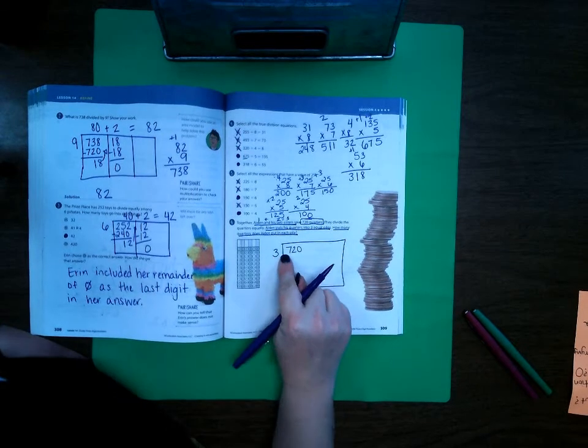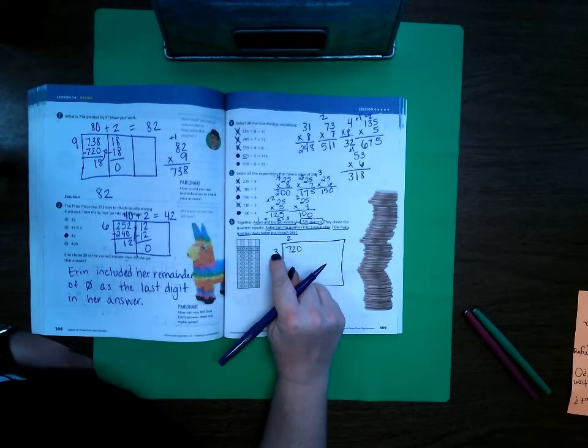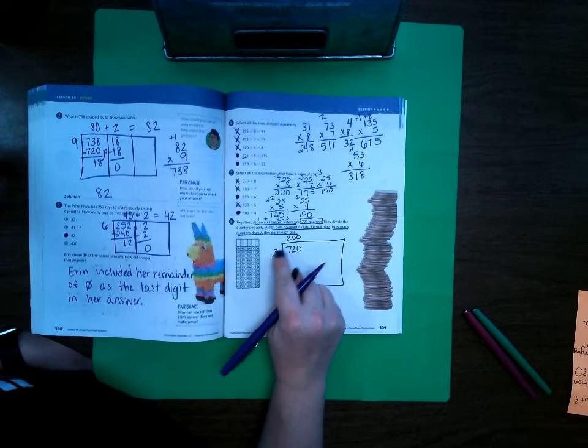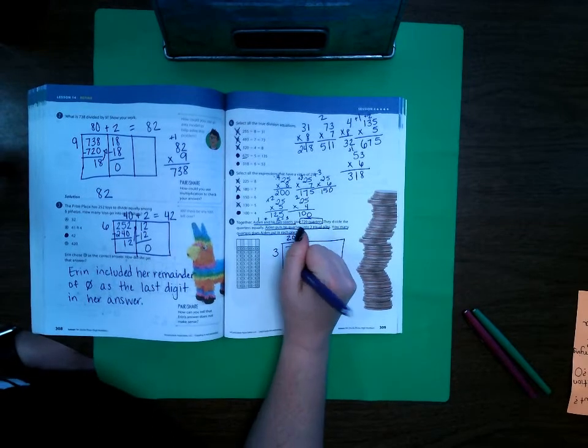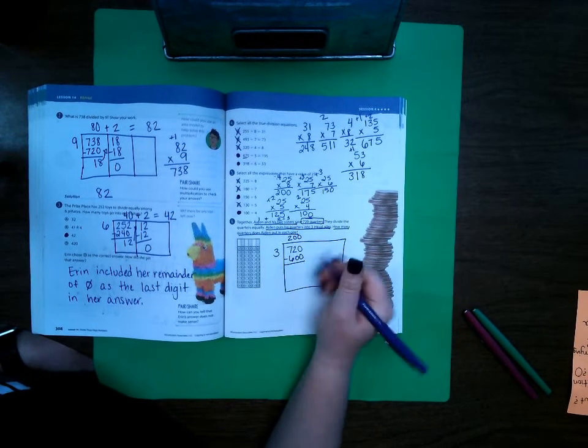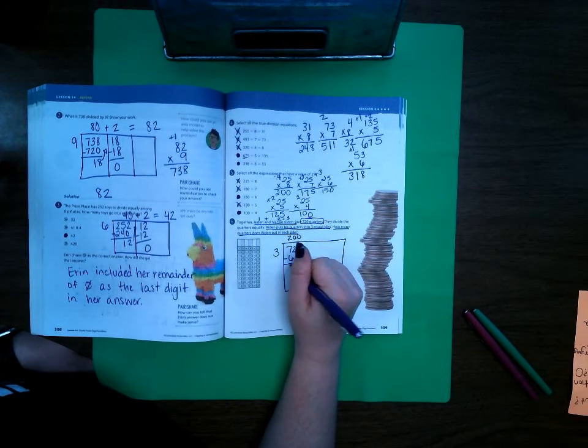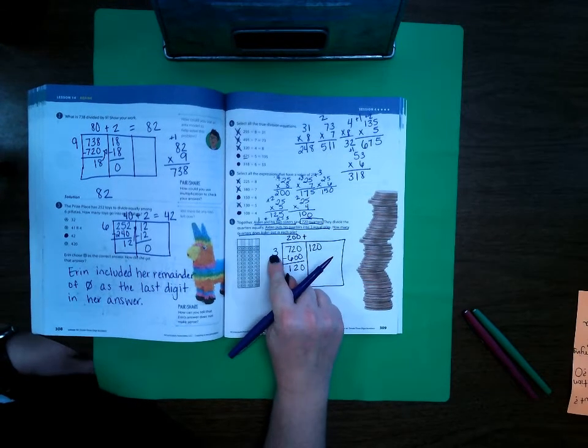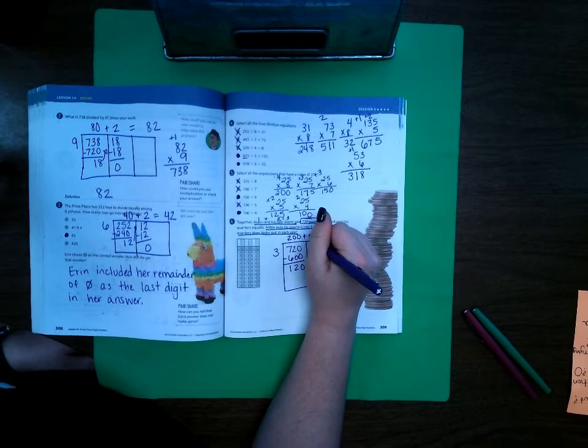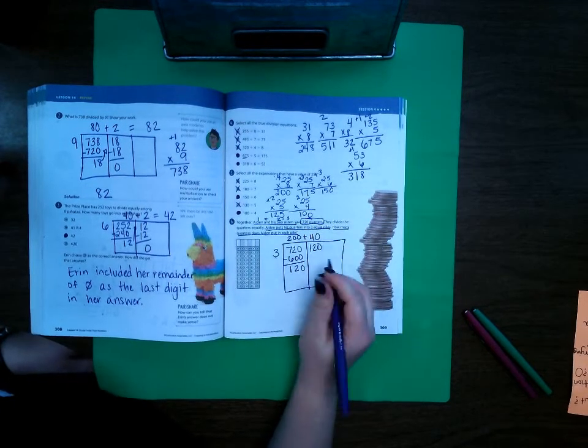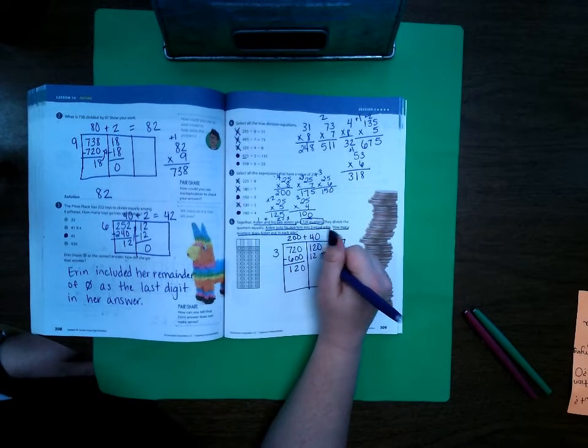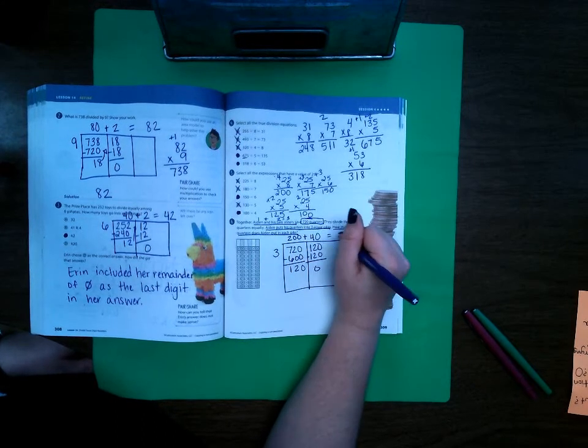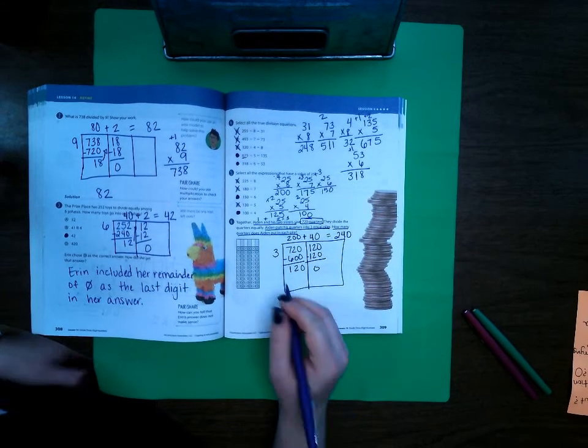Well I know that 3 will go into 7, 2 times because 3 times 2 is 6. But I'm going to add a couple more zeros to make it 3 digits. So 3 times 2 is 6 and then bring my zeros down and that leaves 0, 2 and 1. OK move my 120 up here. I know that 3 times 4 is 12 but there's an extra digit so I'm going to put a 0. So 3 times 4 is 12, add my 0, subtract and there's nothing left. So 200 plus 40 equals 240. So that means there is 240 quarters in each pile.